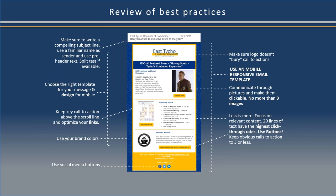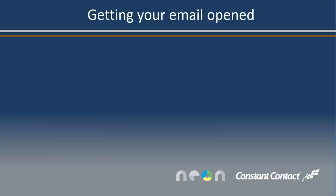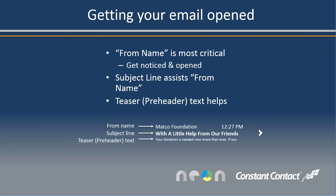Now we have to write a compelling subject line to get the email open — everything I've shared up to now is for nothing if you don't write a great subject line. Your organization's name is probably the key to getting your email open. Especially for nonprofits, it's the from name that gets noticed first. If you're sending an email from a staffer, people may not know that staffer. Even if you're an executive director or CEO, what happens if you leave? The best practice for nonprofits is having email come from your organization. The from name is the number one reason an email gets opened.